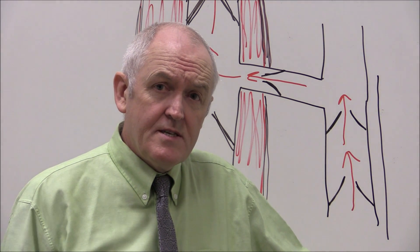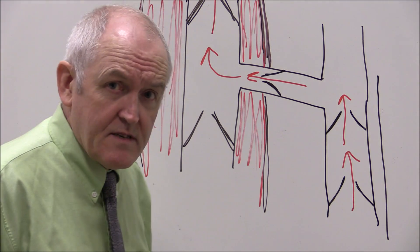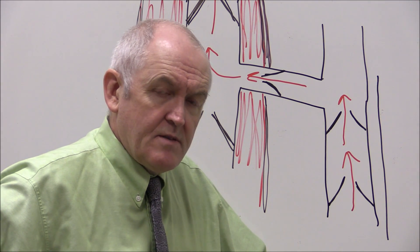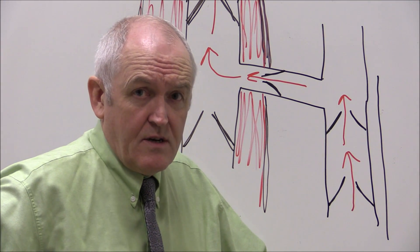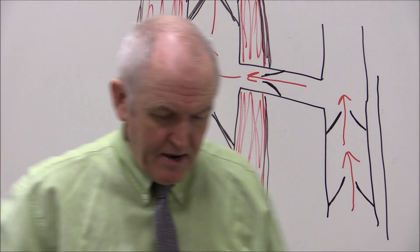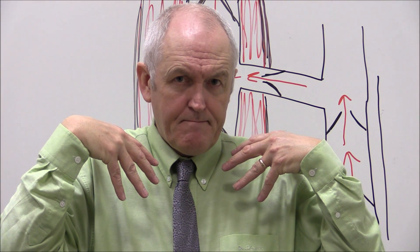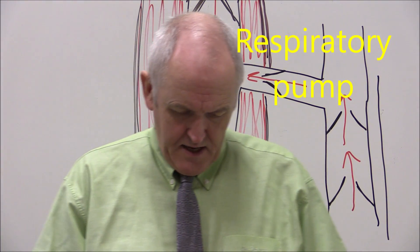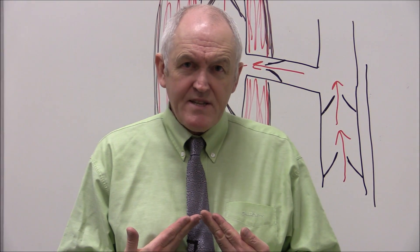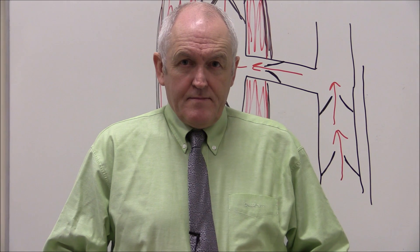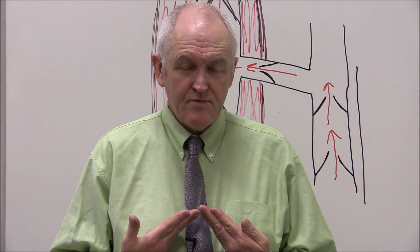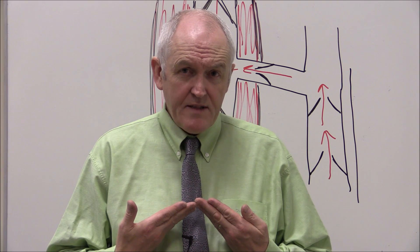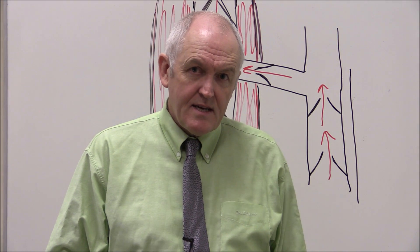To recap, the components contributing to venous return are: contraction of skeletal muscles, movement of blood from the superficial to the deep venous system, and pulsation of adjacent arteries. But how else does blood get back from the periphery to the center? Another mechanism is the respiratory pump. When you breathe in, your diaphragm flattens; when you breathe out, it goes up.